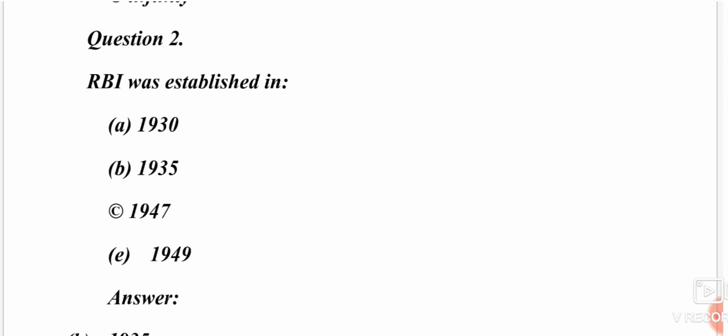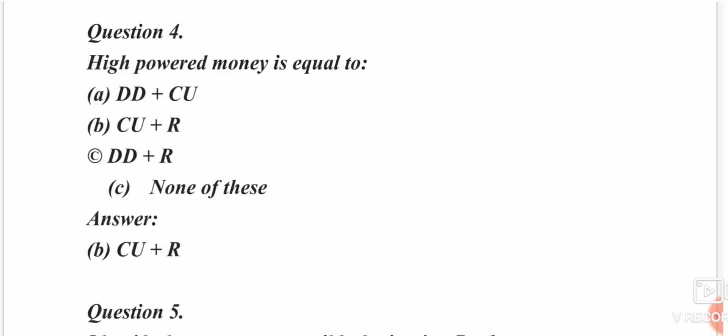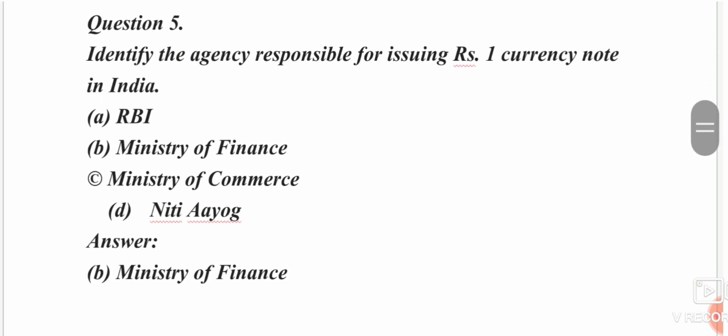The Reserve Bank of India was established in 1935. High power money is equal to CU plus R. Identify the agency responsible for issuing the one-rupee currency note. The options are RBI, Ministry of Finance, Ministry of Commerce, or DYOG. The answer is Ministry of Finance.